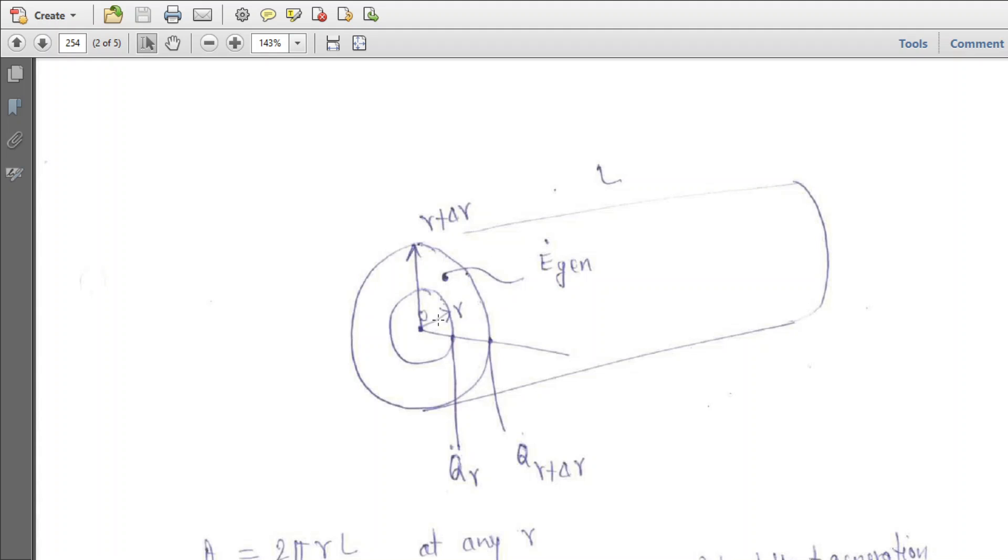We have taken a differential cylinder of some differential length. We are talking about heat transfer only in the radial direction. In the radial side, we have taken a segment at R and increased it to R plus delta R.